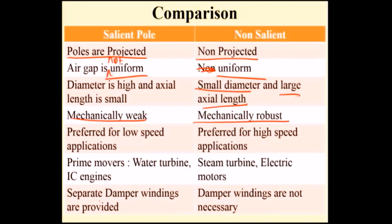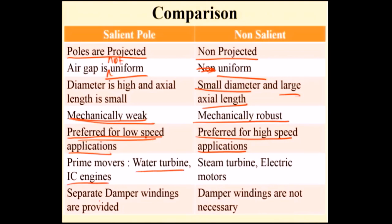The non-salient pole rotor is mechanically robust. The salient pole rotor is suitable for low speed applications, while the non-salient pole rotor is suitable for high speed applications. For low speed, water turbines and IC engines are the suitable prime movers. For high speed non-salient pole rotors, steam turbines and electric motors are the suitable prime movers. Damper windings are required in the salient pole rotor but are not necessary in the non-salient pole rotor.